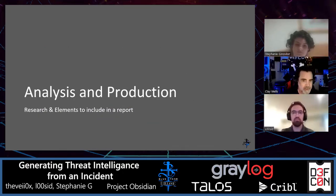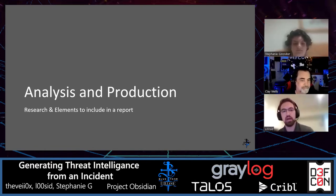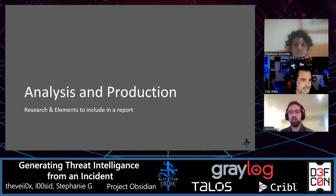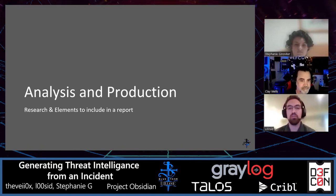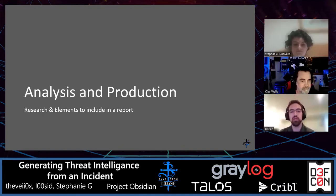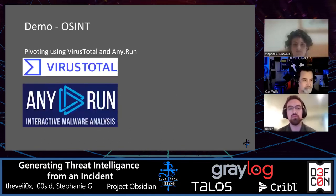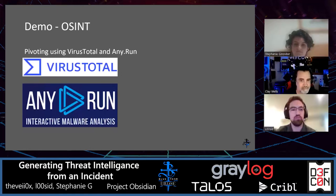Now we'll get into analysis and production. Analysis happens during and in support of an incident, producing CTI that will be included in reporting. The CTI team can really add value by analyzing OSINT and pivoting through IOCs. Open source intelligence can be visualized and analyzed using a lot of different tools, platforms, and models. I'll have a demo here of a couple of those tools — VirusTotal and ANY.RUN — which provide sandboxing and visualization of IOCs.